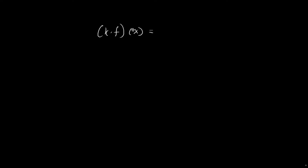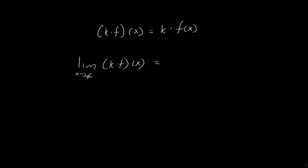The second law I'm going to establish is the constant multiple law. I'm going to do this by first defining the function k times f. The function k times f maps to values equal to k times f of x, where k is some constant. What I want to prove is that the limit as x tends towards c for the function k times f is equal to k times l.